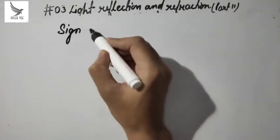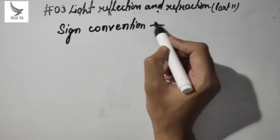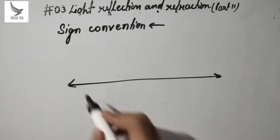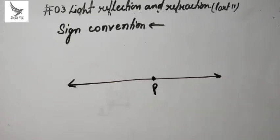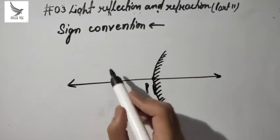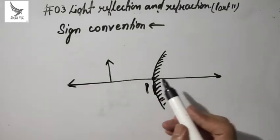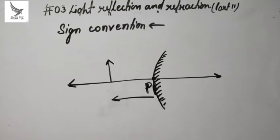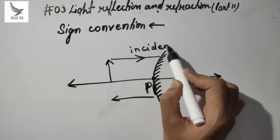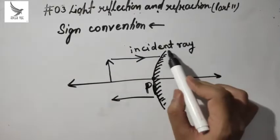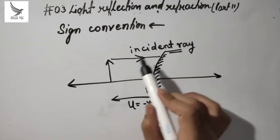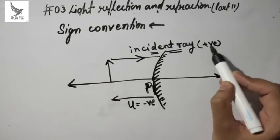Now let's look at the sign convention — some rules to keep in mind while solving numericals. Suppose this is the principal axis and here is the pole. If any object is placed here, all distances are always measured from the pole. If the distance is in the direction opposite to the incident ray, we take it as negative.